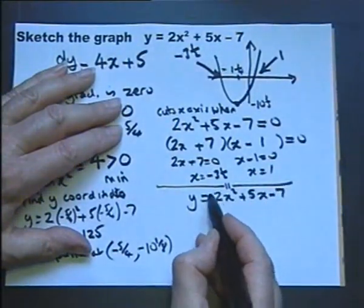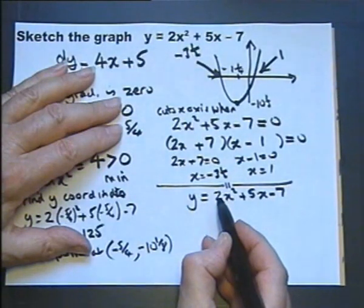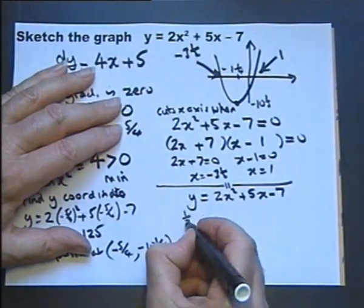Now to complete the square, this must be 1x squared, so I need to divide both sides by 2 to start with. So that'll give me this.